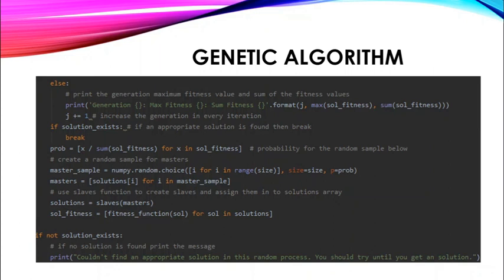Then you can see a probability for the random sample, which is for the masters. I create masters and then create slaves from these masters, setting solutions to the slaves. After this, I do the same with my solutions array. When I find a solution, I set it true and print the solution. If still no solution exists, print the corresponding message.